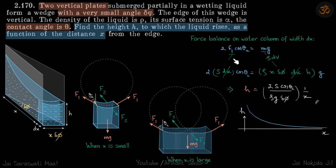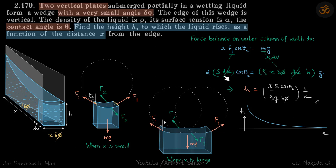Writing forces in the vertical direction: 2f1·cos(θc) = mg. Now f1 = s·dx, but dx is this horizontal length and because the surface is an arc, this length need not be the same as dl. We will discuss that in the next slide. For now, let's write 2f1·cos(θc) = 2s·dx·cos(θc).